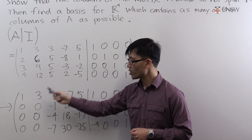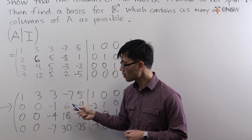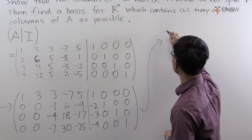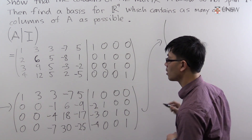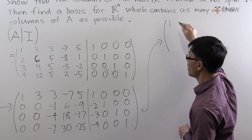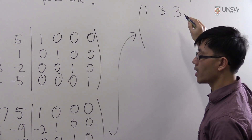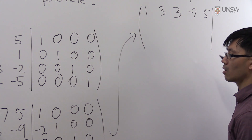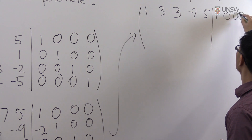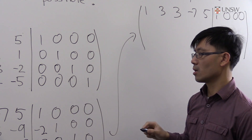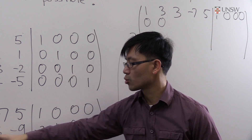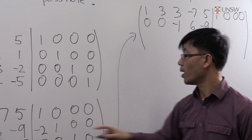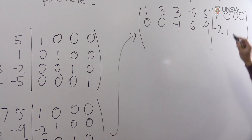We need to clear two more terms. The first and second rows are fine, so we keep them: row 1 is 1, 3, 3, -7, 5, 1, 0, 0, 0; row 2 is 0, 0, -1, 6, -9, -2, 1, 0, 0. We continue Gaussian elimination on rows 3 and 4.